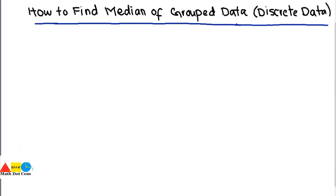In our previous lecture, we have seen how you can find the median of ungrouped data in case of odd and even number of observations.